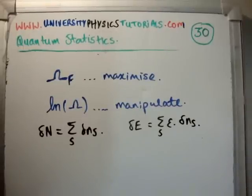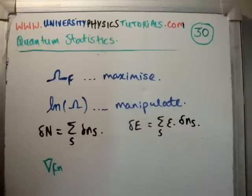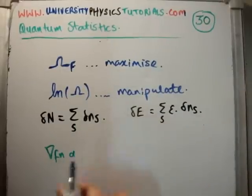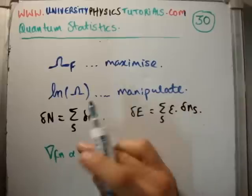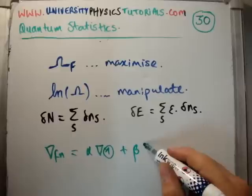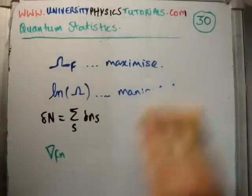In order to maximize or minimize something subject to constraints, we use Lagrange multipliers. The key point is that when something is maximized or minimized, the gradients are proportional. So we get the gradient of our function and we know it's proportional to the gradient of our first constraint with proportionality constant alpha, and also to the gradient of the second constraint with proportionality constant beta. That will give us our occupancy function.